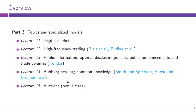Finally, the third part of the course will go beyond the textbook and look at some more specific topics that are not covered in the textbook but are still highly relevant to modern financial markets. These topics include digital markets, algorithmic and high-frequency trading, issues relating to public information, and issues dealing with bubbles and herding in financial markets. There will also be one extra class on auction models — a last-minute addition that is still relevant to financial markets but not well integrated into the rest of the class.